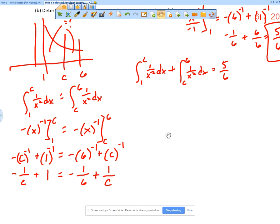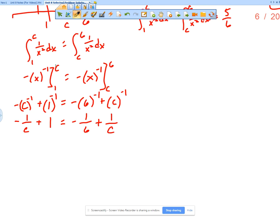The first thing I'm going to do is multiply by 6C just to get rid of the denominators altogether. If I do that, I get negative 6 plus 6C equals negative C plus 6. Now I'm going to solve. So I'm going to add C to both sides, so I get 7C, and I'm going to add 6 to both sides, so I get 12. So C is equal to 12 sevenths.